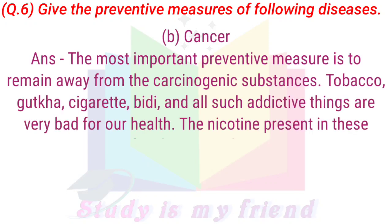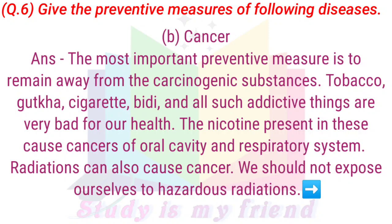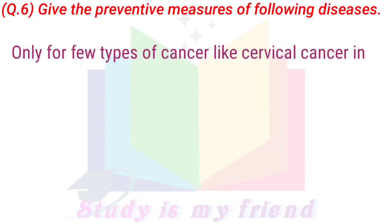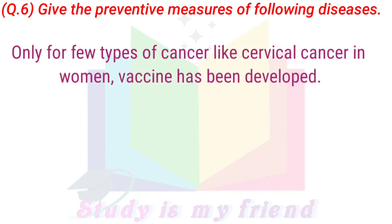B. Cancer. Answer: The most important preventive measure is to remain away from carcinogenic substances. Tobacco, Gutka, cigarette, BD, and all such addictive things are very bad for our health. The nicotine present in these causes cancers of the oral cavity and of the respiratory system. Radiations can also cause cancer; we should not expose ourselves to hazardous radiations. Only for a few types of cancers, like cervical cancer in women, a vaccine has been developed.